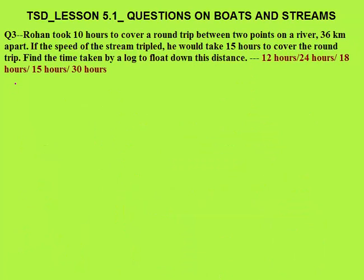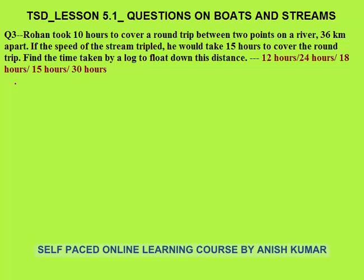Third question: Rohan took 10 hours to cover a round trip between two points on a river 36 km apart — going 36 km upstream and returning 36 km downstream. If the speed of the stream is tripled, he would take 15 hours to cover the same round trip. Find the time taken by a log to float down this distance. The log floats at the speed of the stream, so the first task is to find the speed of the stream.